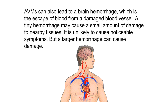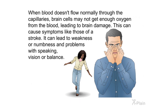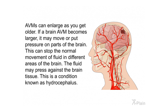AVMs can also lead to a brain hemorrhage — the escape of blood from a damaged blood vessel. A tiny hemorrhage may cause a small amount of damage to nearby tissues with few noticeable symptoms, but a larger hemorrhage can cause significant damage. When blood doesn't flow normally through the capillaries, brain cells may not get enough oxygen, leading to brain damage with stroke-like symptoms such as weakness, numbness, and problems with speaking, vision, or balance. AVMs can also enlarge with age, potentially causing hydrocephalus.